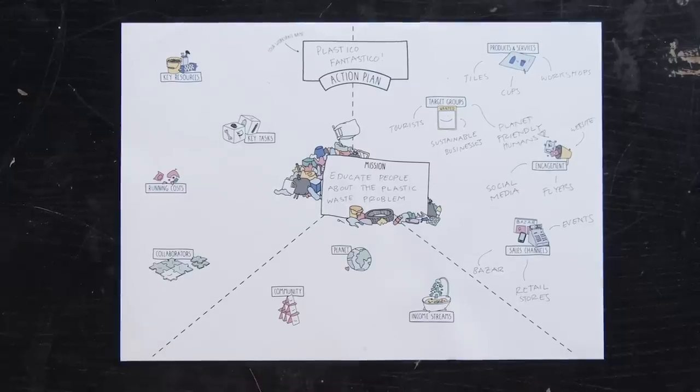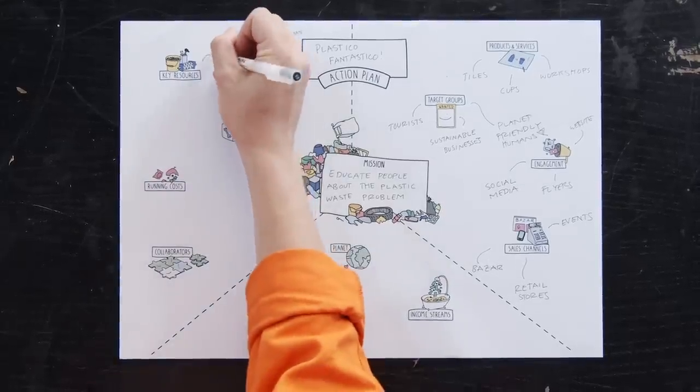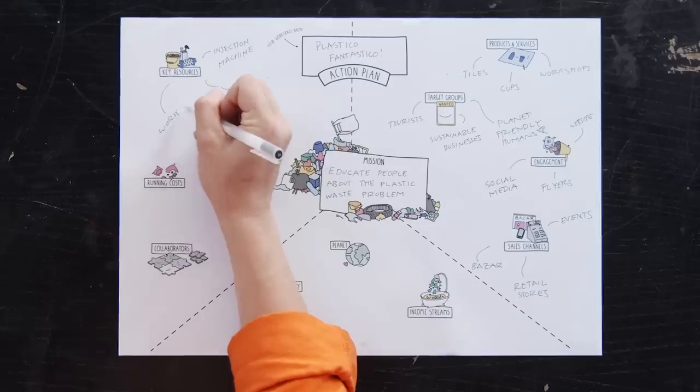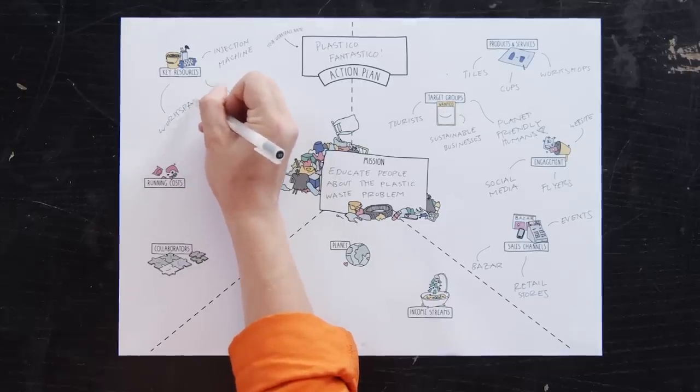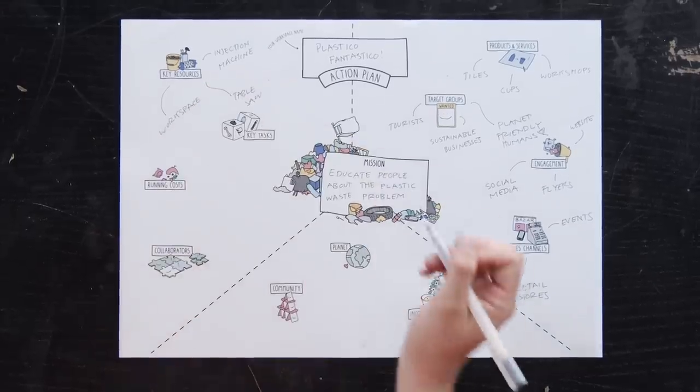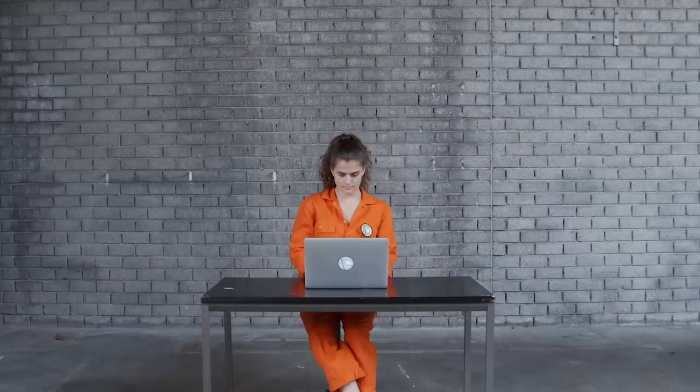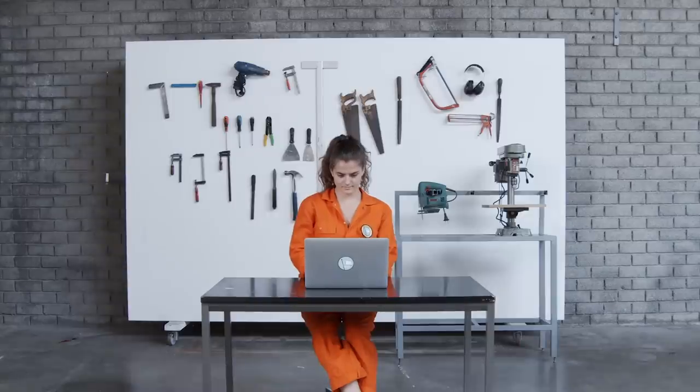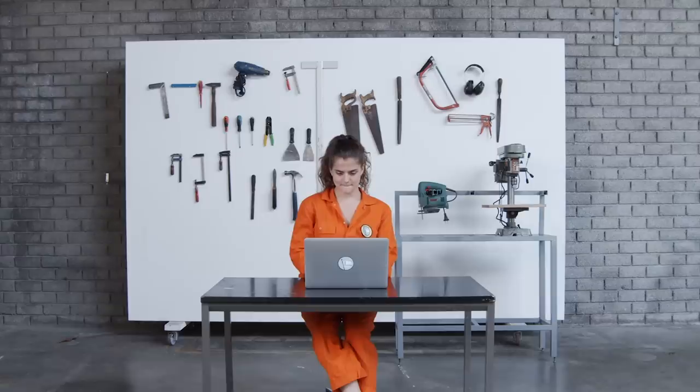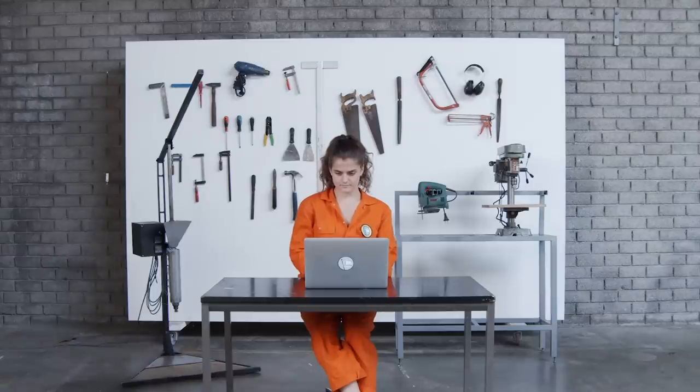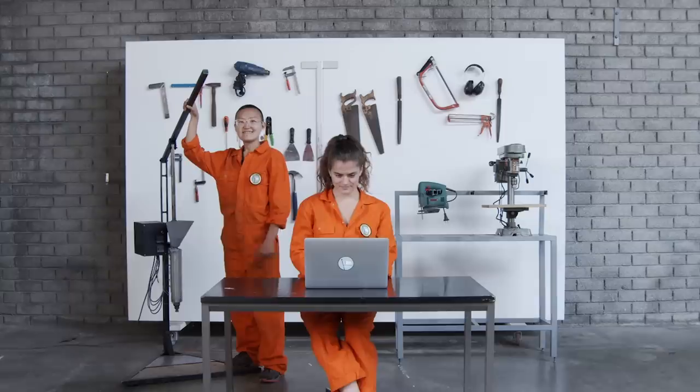Now that we've figured out the customer-facing side of the business, we should now think more about the most important ins and outs of actually running the business on the left side of the action plan. We start with our key resources, or the tools, machines, people, or other things that are a must-have for you to successfully deliver on your mission. Maybe that's a certain machine, a space to run your workspace, or specific people that you need.